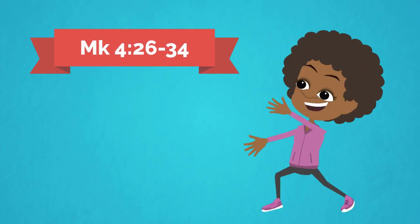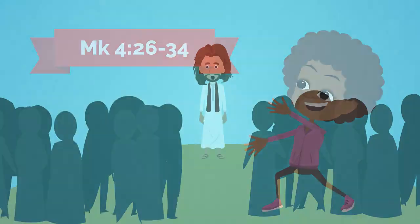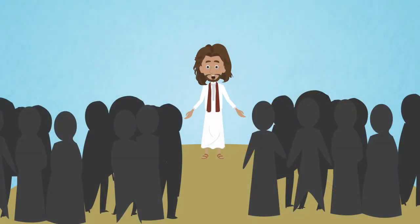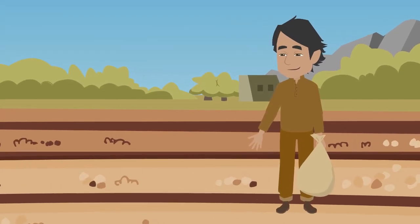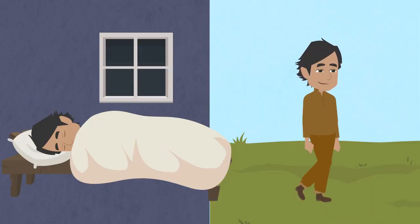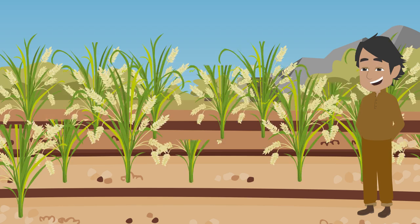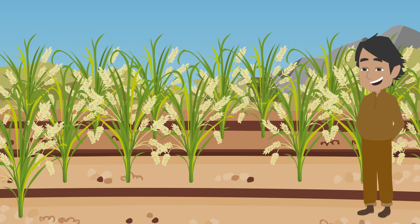A reading from the Gospel of Mark. Jesus said to the crowds, This is how it is with the kingdom of God. It is as if a man were to scatter seed on the land, and would sleep and rise night and day, and through it all the seed would sprout and grow. He knows not how.